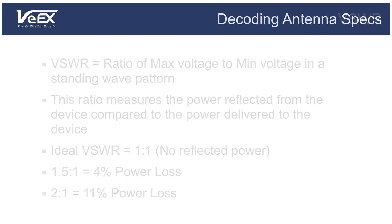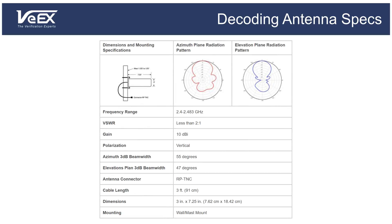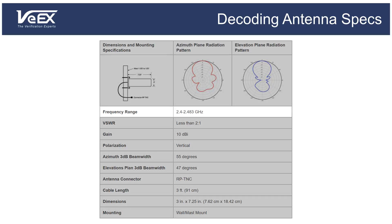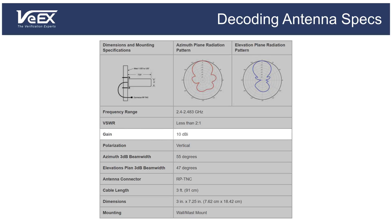Now that we've reviewed all the important parameters, let's use that information to take a look at a sample antenna data sheet. This antenna operates in the 2.4 GHz Wi-Fi frequency band. Based on the radiation charts, we see that it has a directional antenna with a horizontal beam width of 55 degrees and a vertical beam width of 47 degrees. It provides a gain of 10 dBi.